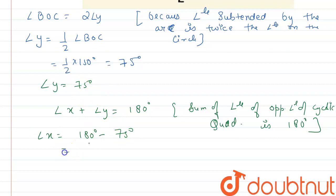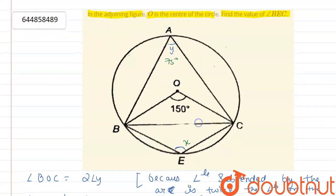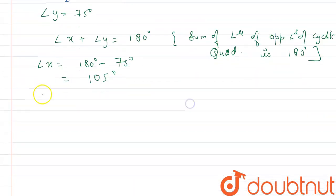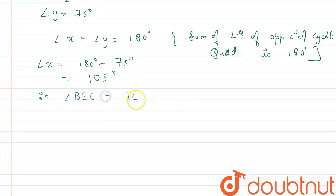So here we get angle X is equal to 180 minus 75, which equals 105 degrees. Angle X is here angle BEC. So therefore, angle BEC is equal to 105 degrees. This is our answer.